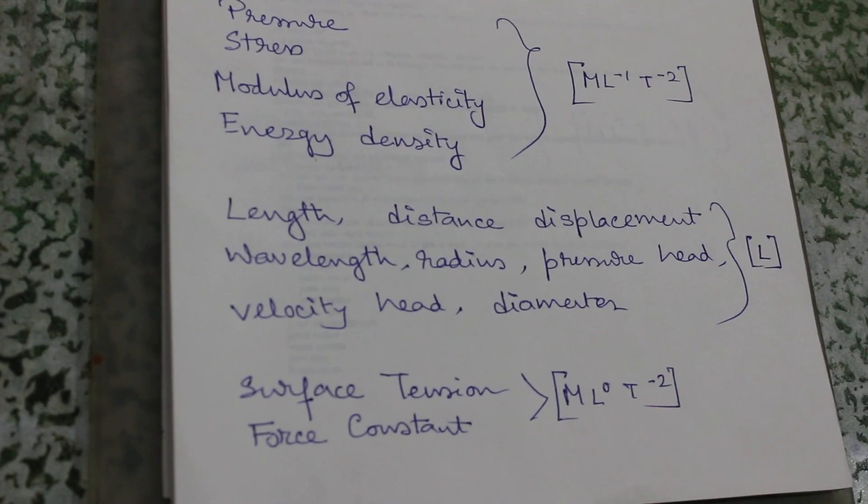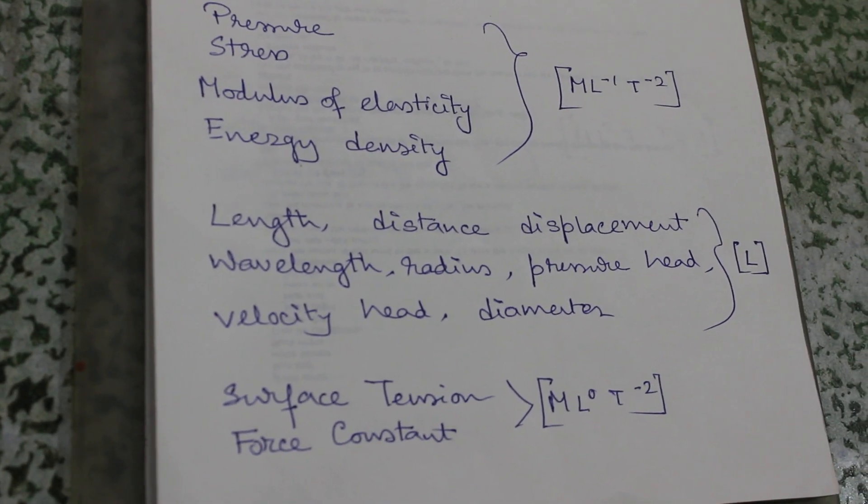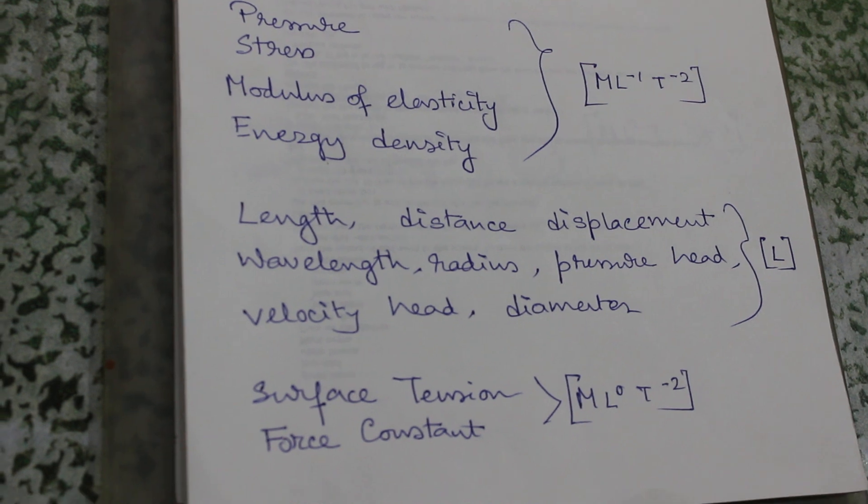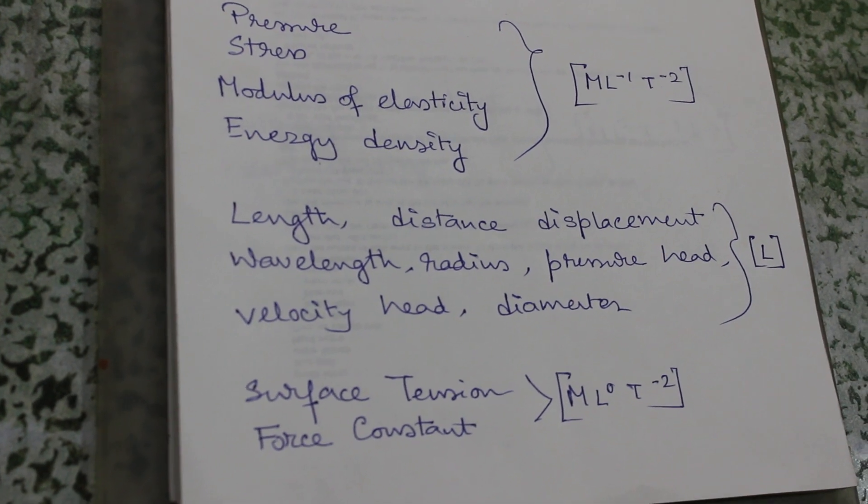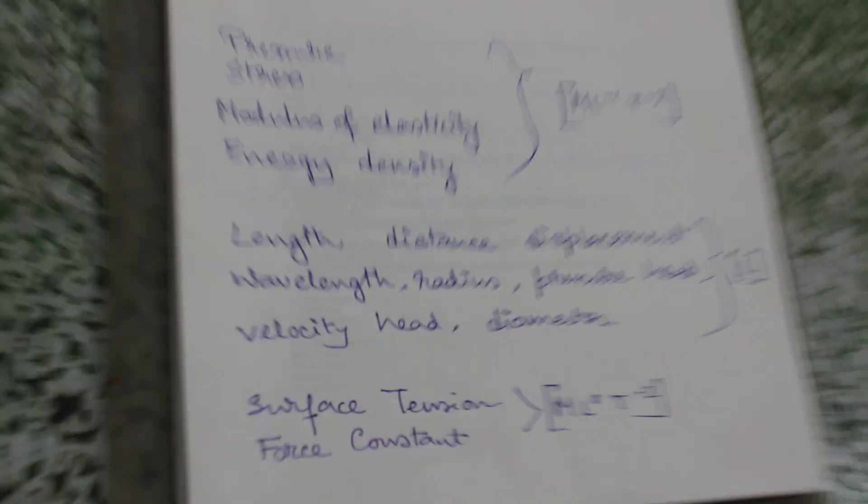Next is surface tension and force constant. They also have the same dimension: L⁰ T⁻², or simply T⁻².